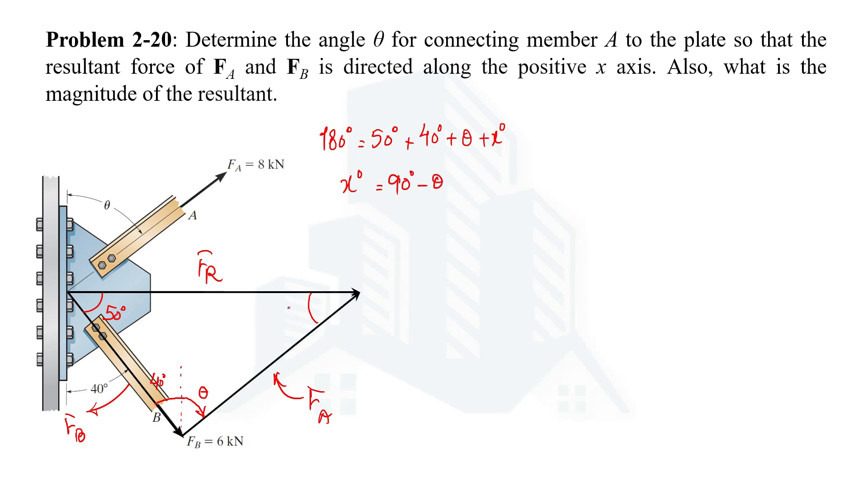Now in this triangle you can see that one interior angle, 50, is known. So we can take sin 50 degrees. The opposite side of 50 is FA, which has a magnitude of 8. Now it can be equated to this interior angle, but if we equate to 90 minus theta, then we know the opposite side, which is FB.